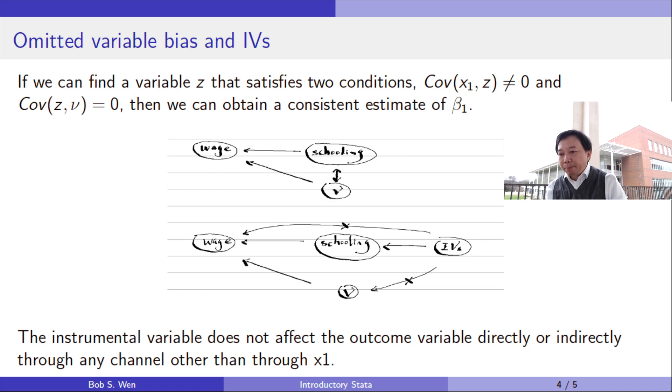Then we can obtain a consistent estimate of beta 1. The instrumental variable does not affect the outcome variable directly or indirectly through any channel other than through the endogenous variable.